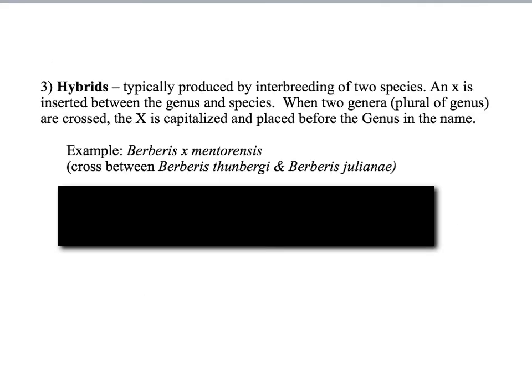Another example of a plant naming convention is how you show that a plant is a hybrid. A hybrid is typically the breeding of two species, and you put an x in front of the new species name. For example, the cross between Berberis thunbergii and Berberis julianae creates a brand new species, and since the species is a cross between two other species, an x is put in front of the new species name. This is your introduction to plant classification and naming, and in the next few presentations we'll get into plant ID characteristics. Be sure to keep in touch on the online classroom and bring any questions to lab as well.